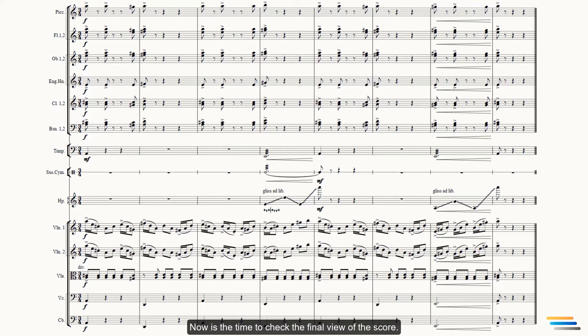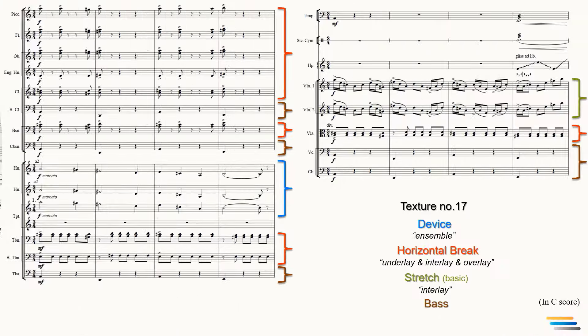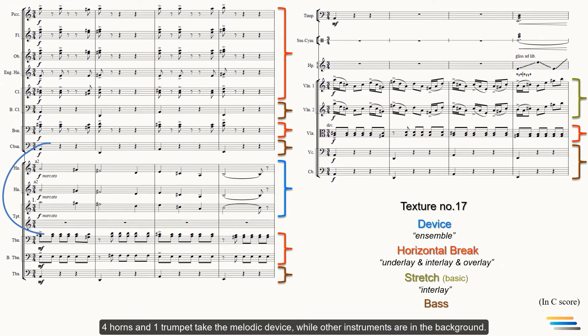Now is the time to check the final view of the score. Four horns and one trumpet take the melodic device, while other instruments are in the background. The dynamic marking is forte for all instruments, except for the trombones, as I wanted less power. So we have done the orchestration process.